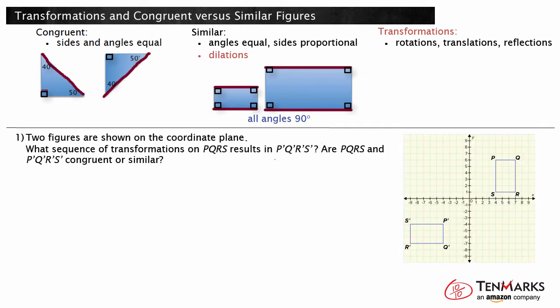Let's look at an example. Two figures are shown on the coordinate plane below. What sequence of transformations on figure P, Q, R, S results in figure P', Q', R', S'? Are the two figures congruent or similar?